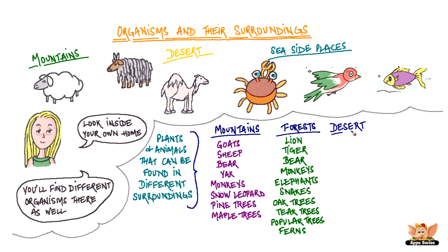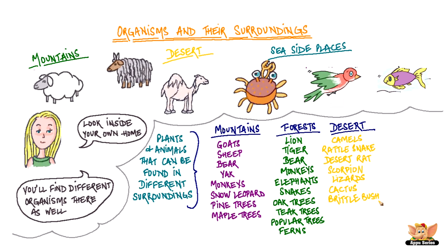Go to deserts and there will be camels, rattlesnakes, desert rat, scorpions, lizards, and plants such as the cactus and brittle bush. All these again have adapted to the harsh and hot conditions of the desert.